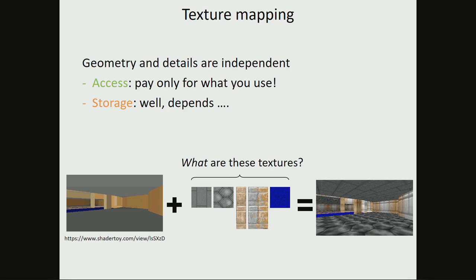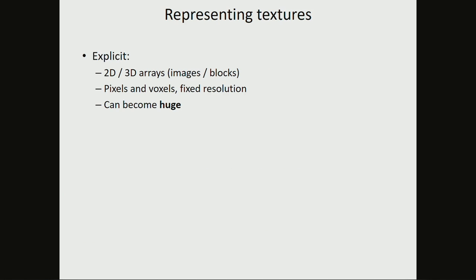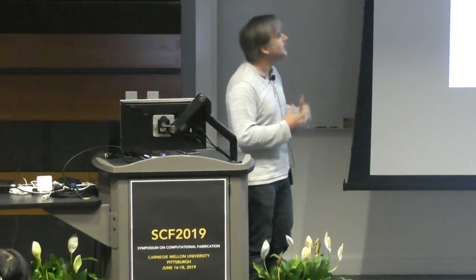Texture mapping is great because it really goes a long way to solve access, in the sense that you only pay where you are actually using details. Now, in terms of storage, well, that really depends. That depends how you encode your textures. If you're using what I call here explicit textures, then you are going to encode your images or your block of material as a 2D or 3D grid of either pixels or voxels. This can become huge, because if you have a lot of them, this quickly takes a lot of memory. Now, on the other hand, it's very convenient for authoring, because we have great tools to paint pixels or to deal with voxels. You can even scan this if you have the appropriate equipment. So that's very convenient.